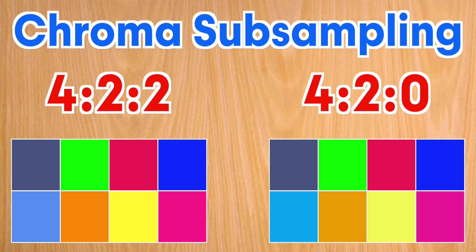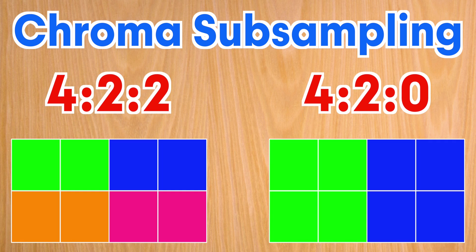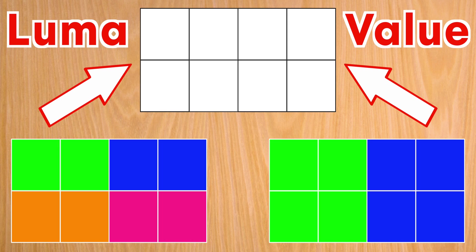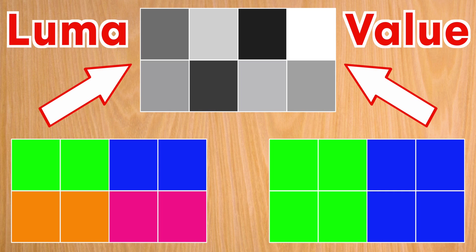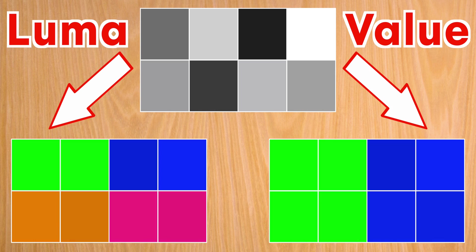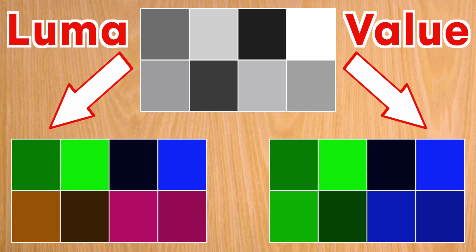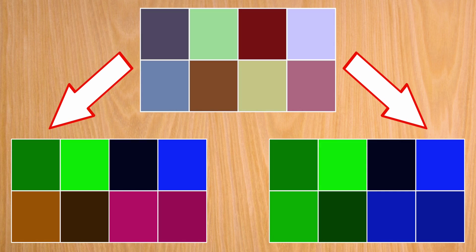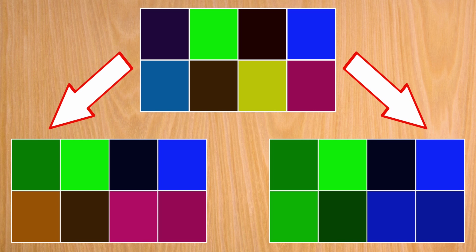At first glance, it may seem like 4:2:2 and 4:2:0 color sampling would result in a lot of blocky pixels with the same color. But when we consider that each pixel still has its own luma or brightness value, we see various shades of that same color being copied from the other pixels, so the blockiness and changes from the original color don't look quite as drastic.